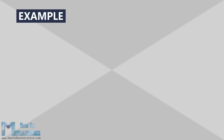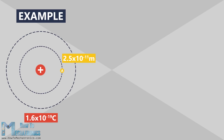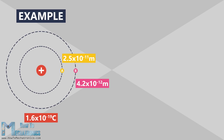Let's take a look at an example which will help us easily understand the term electric potential difference. We have a positive charge of 1.6 times 10 to the minus 19 coulombs — it is the main charge that is creating the potential. The first circle is the first energy level at a distance of 2.5 times 10 to the minus 11 meters away from the charge. The second circle is the second energy level at a distance of 4.2 times 10 to the minus 12 meters away from the charge.